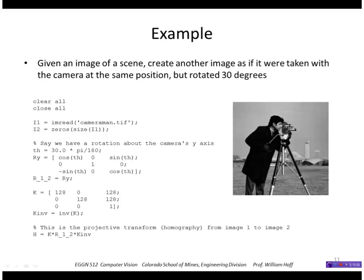So let's take an example. Say we start with an image and we want to create another image as if it were taken with the same camera but just rotated, say by 30 degrees. So let's say I assume that the rotation is about the camera's y axis, so I'm going to get this rotation matrix.